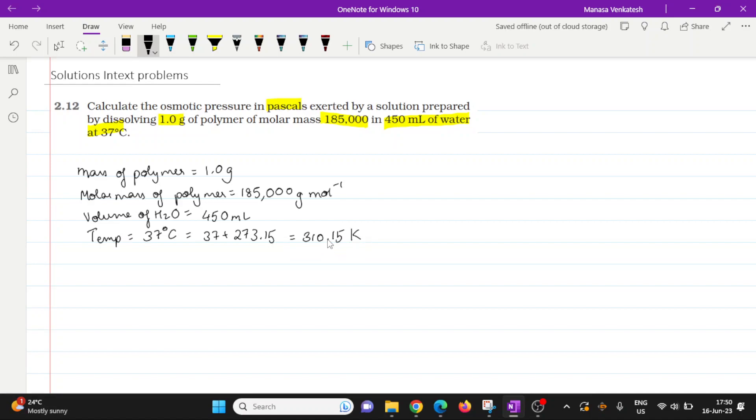Okay, so we need to calculate the osmotic pressure in pascal. So we have π equals CRT. This is from the equation in your textbook related to the osmotic pressure as a colligative property.